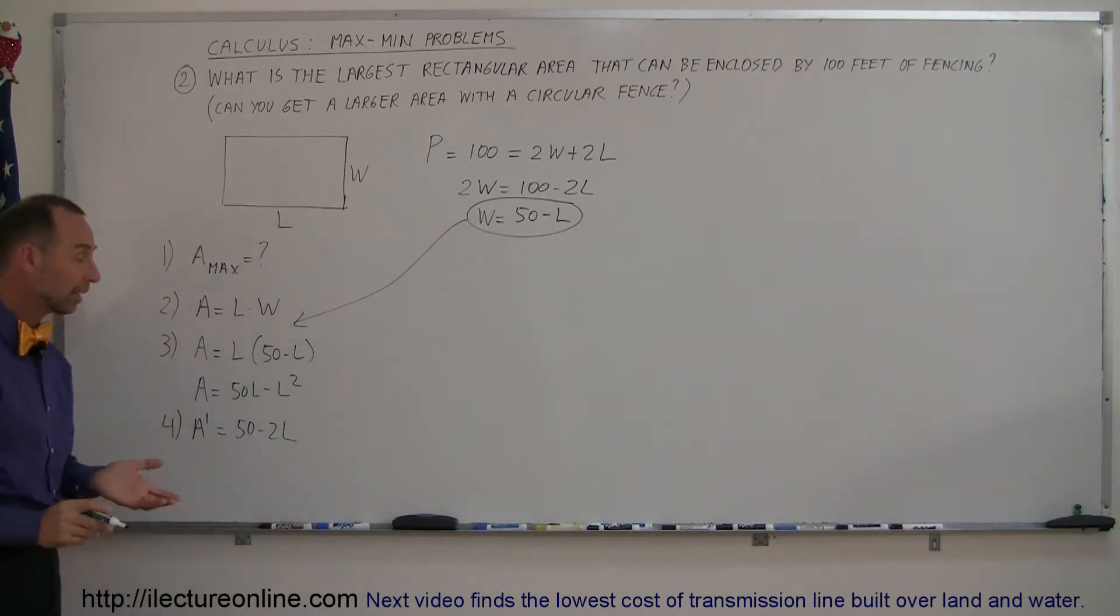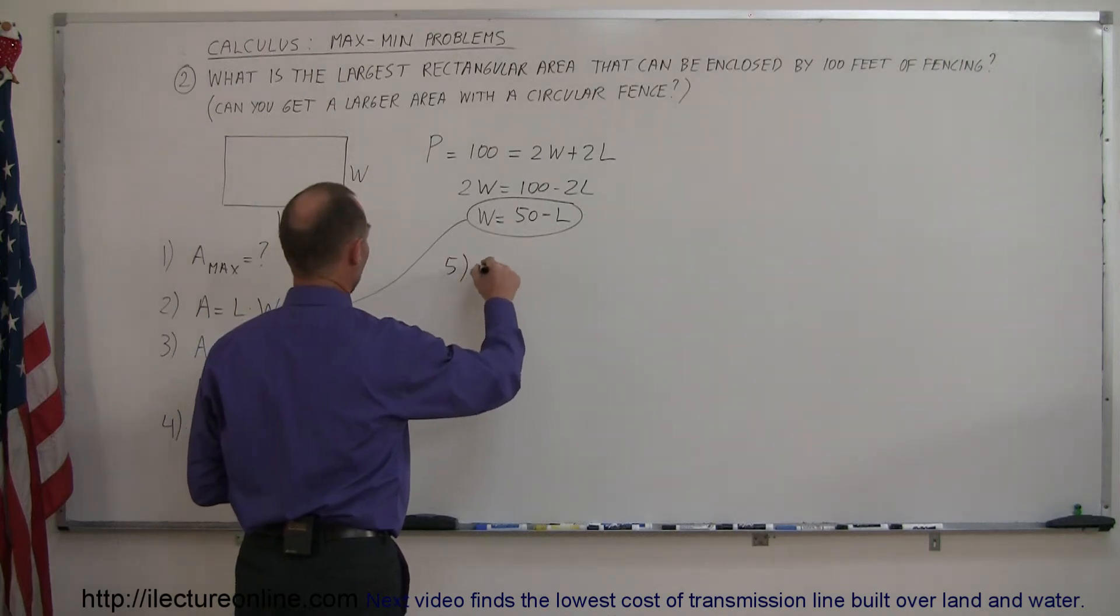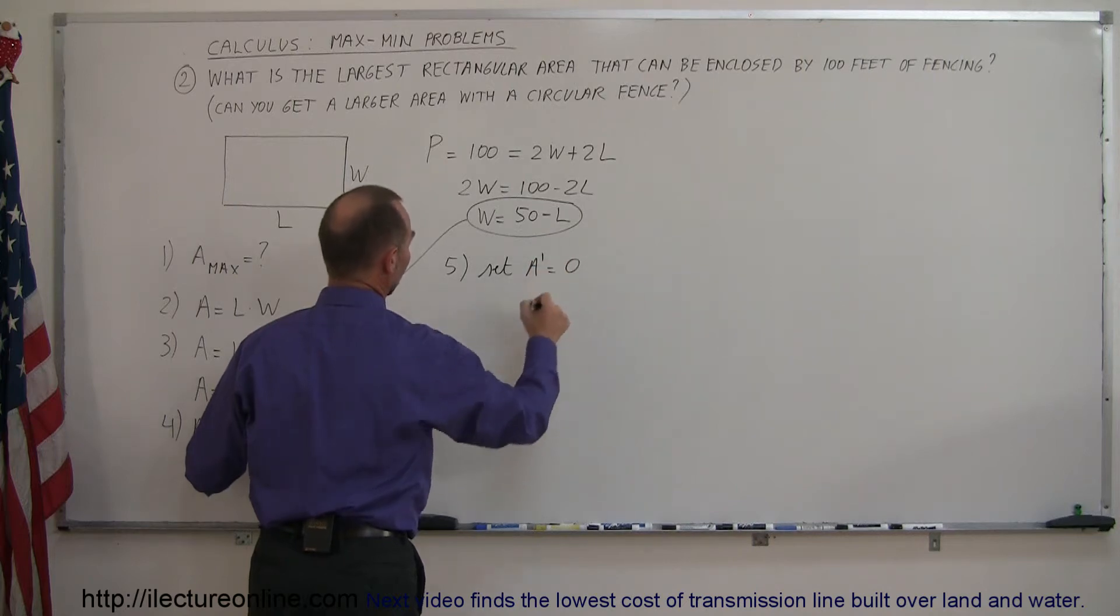And then after that, we take the derivative and set it equal to 0. So step 5, set the derivative of the area equal to 0.